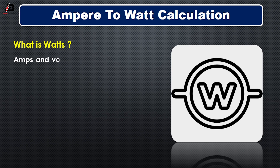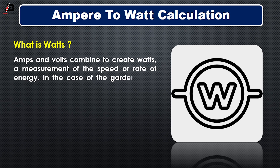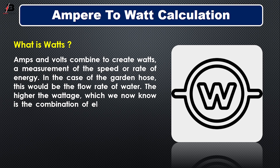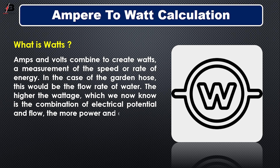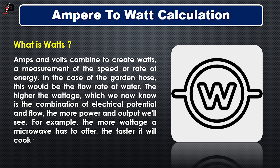What is watts? Ampere and volt combine to create watt, which is a measure of the speed or rate of energy. In the case of the garden hose, this would be the flow rate of water. The higher the wattage — which is the combination of electrical potential and flow — the more power and output we will see. For example, the more wattage a microwave has, the faster it will cook your food.